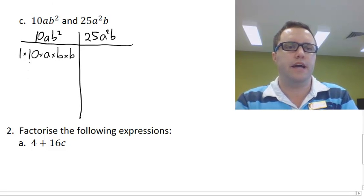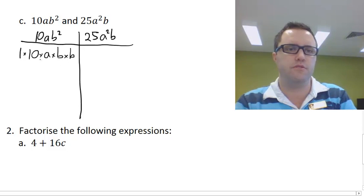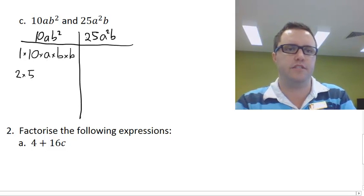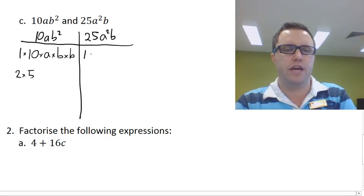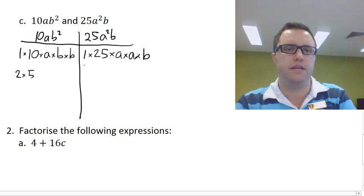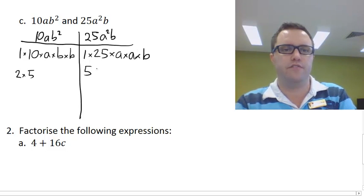Once you've written one set of the pronumerals out in their expanded form, you can just keep going with just the numbers, so 2 times 5 and we're done with that. In here we have 1 times 25 times A times A times B, so A times A is A squared, B is just B. 1 times 25 and 5 times 5.